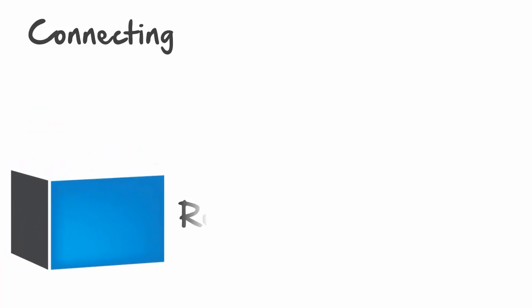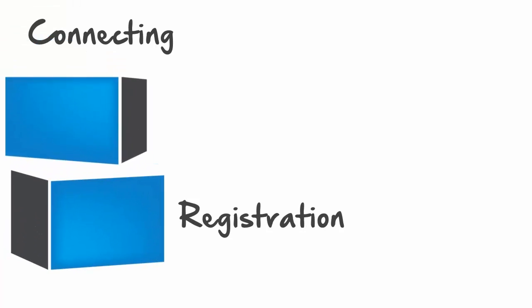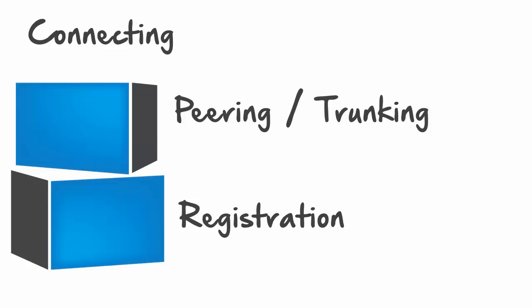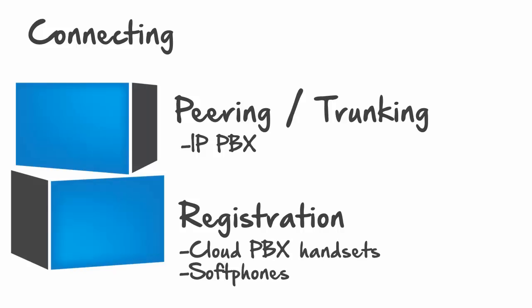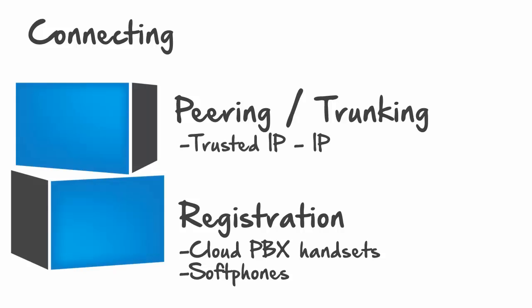In summary, there are two mechanisms for connecting with SIP City: registration or pairing. Generalising, you'd use SIP pairing or trunking to connect your IP PBX to us, and registration if you're connecting handsets or soft phones to our cloud PBX. Pairing is the more straightforward of the two, as you're connecting your static WAN address via a trusted IP-to-IP relationship.